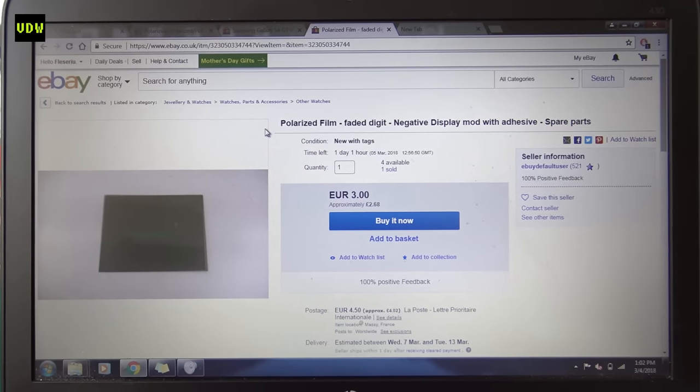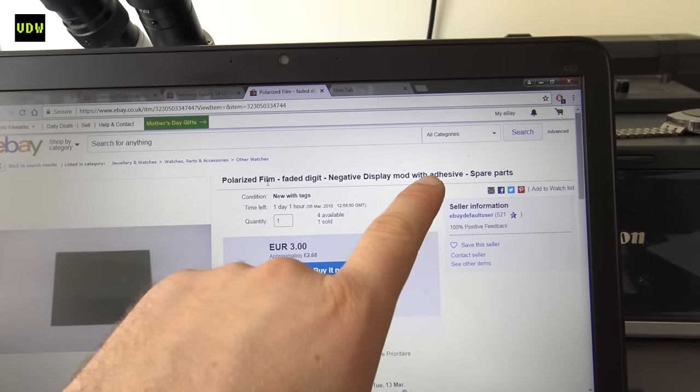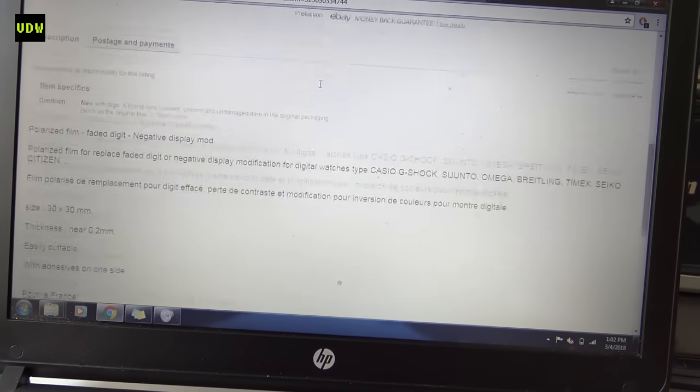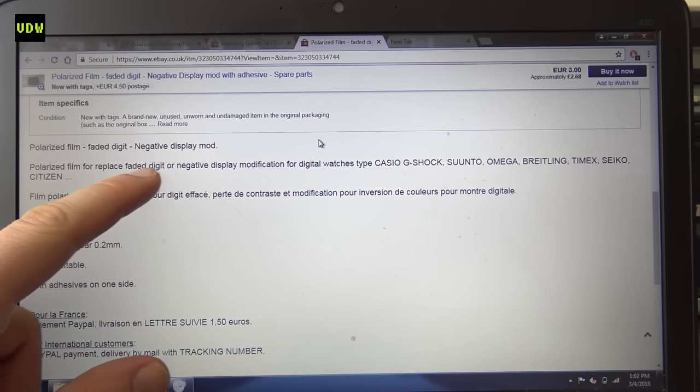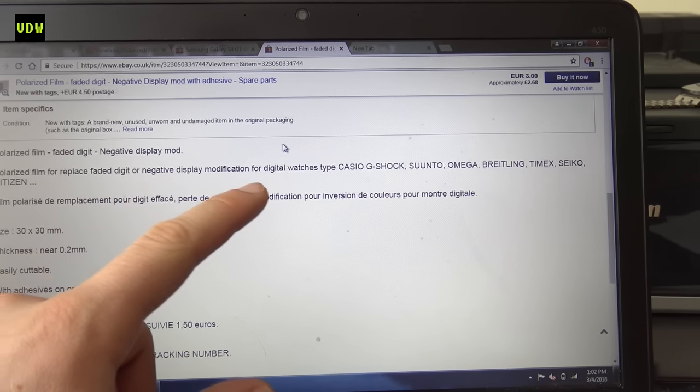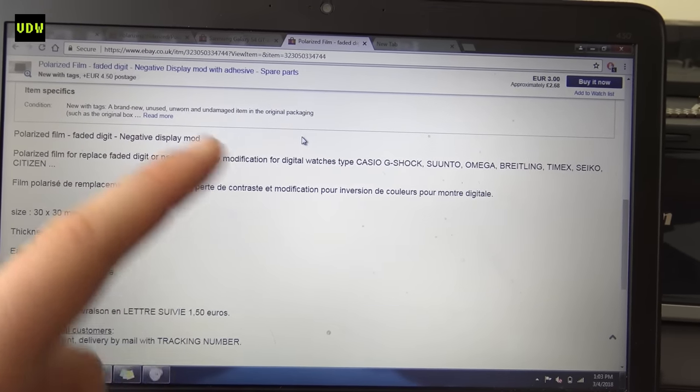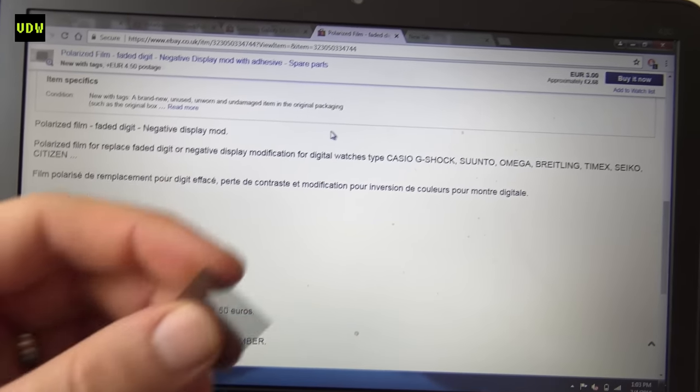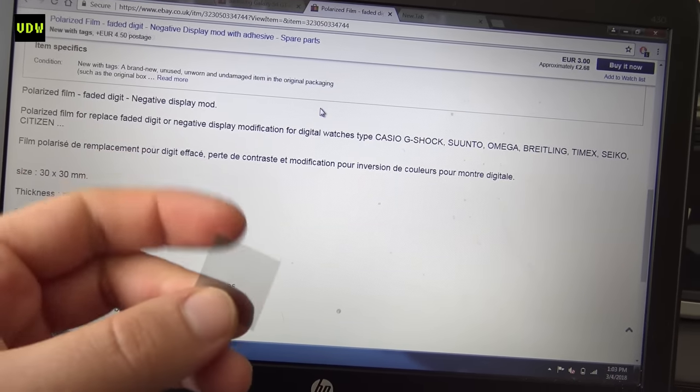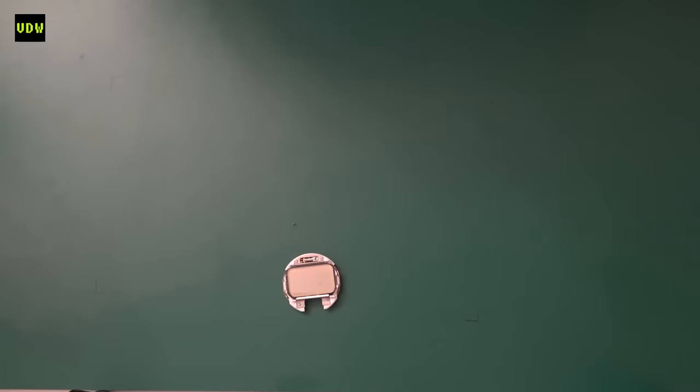This is the type of filter that I'm getting. It's polarized film for faded digit, negative display mod with adhesive spare parts. If we look on the description, it says polarized film for replace faded digit or negative display modifications. This is also used if you want to do a negative display mod. The good thing about this is that it's already adhesive. If you were to buy a polarizing film with no adhesive, you would have to find a way to glue it on.